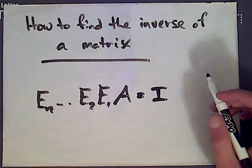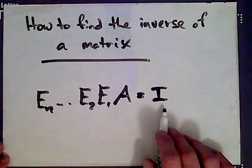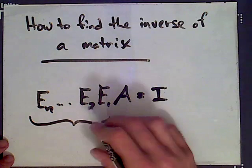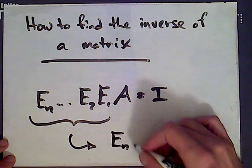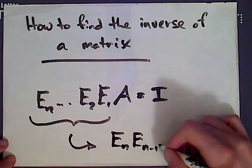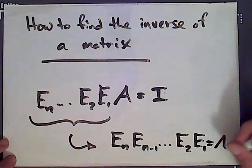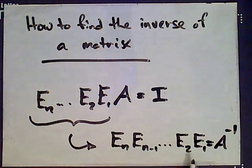As we saw last time, the inverse has the property that the inverse of A times A is the identity. What we see here is that if we multiply E1, E2, and En, this matrix has that property. So this would be En minus 1, the next one down, E2, E1. This has the property of the inverse, and there's only one inverse for a matrix. So that means that this string of elementary matrices multiplied together is the inverse of A. So if we can get that matrix, we can find A inverse.